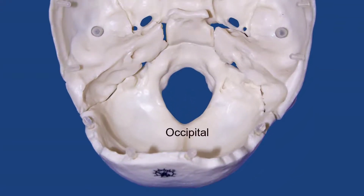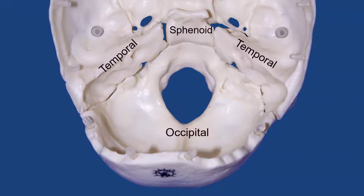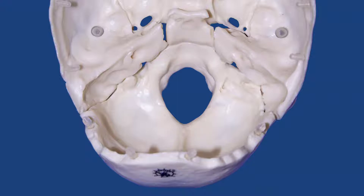It is bordered by the sphenoid bone and two temporal bones on either side. One of the most obvious features that this bone has is this large, very important opening, which is referred to very appropriately as the foramen magnum. The phrase foramen magnum simply means large opening or great opening.